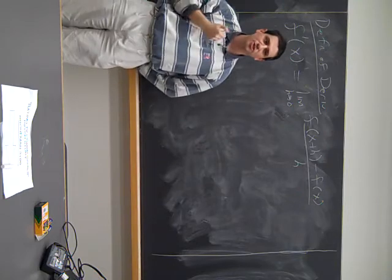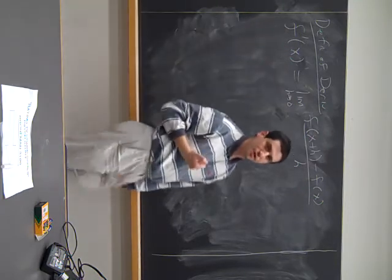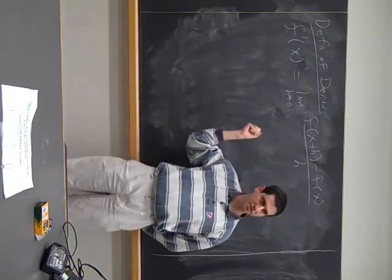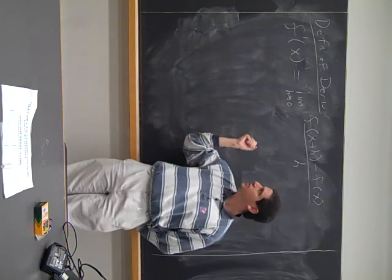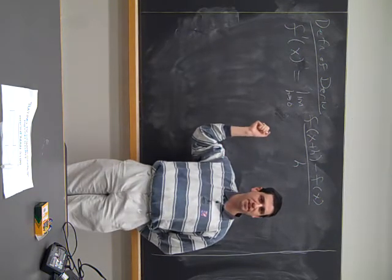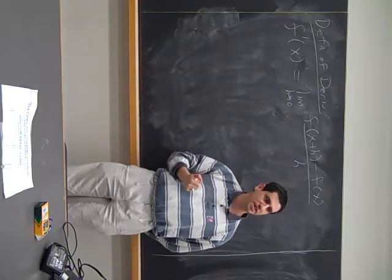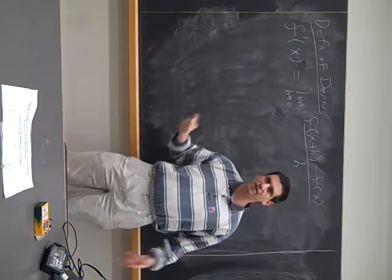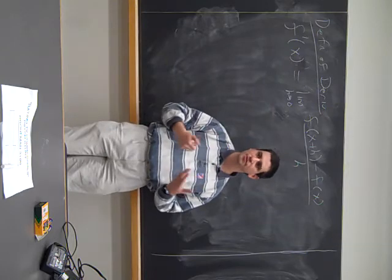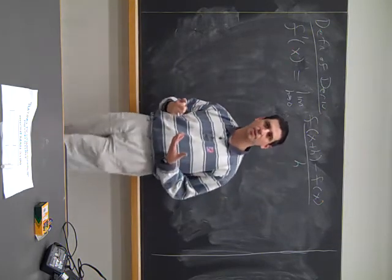There are a bunch of questions you should ask when you see something like this. The first is: for which functions does this limit exist? The next is: do I always have to go back to this limit definition, or are there shortcut ways to calculate the derivative? And if I have combinations of functions, is there a nice way to get derivatives of combinations?